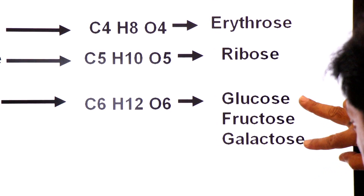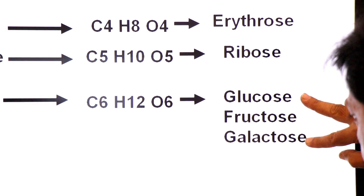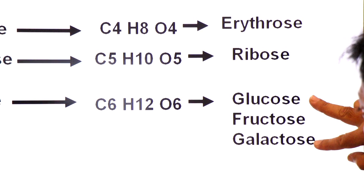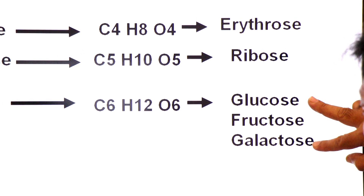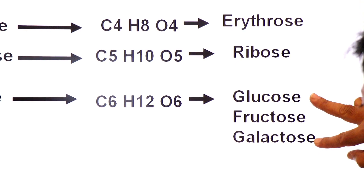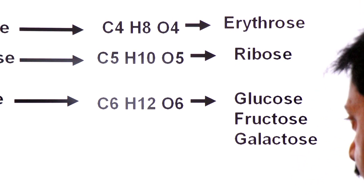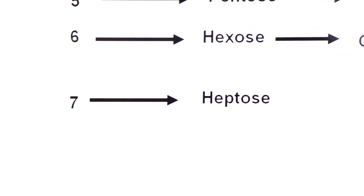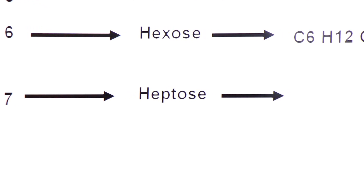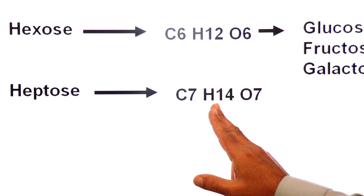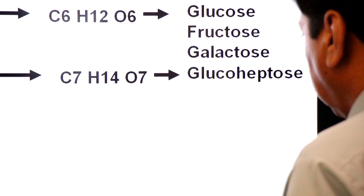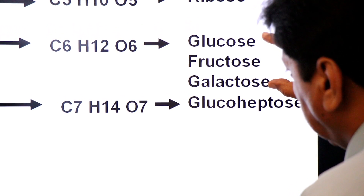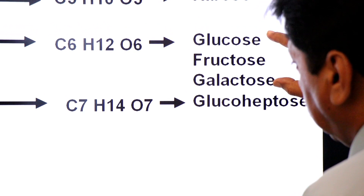Glucose, fructose, and galactose all share the molecular formula C6H12O6, but their atomic arrangements differ. This introduces the term 'isomers.' With seven carbons, the category is heptose, formula C7H14O7. Glucose, fructose, and galactose are all hexoses and are isomers of each other.